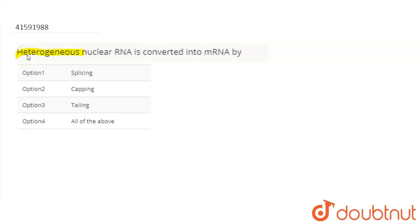So, the question is: heterogeneous nuclear RNA is converted into mRNA by - option 1 splicing, option 2 capping, option 3 tailing, and option 4, all of the above.